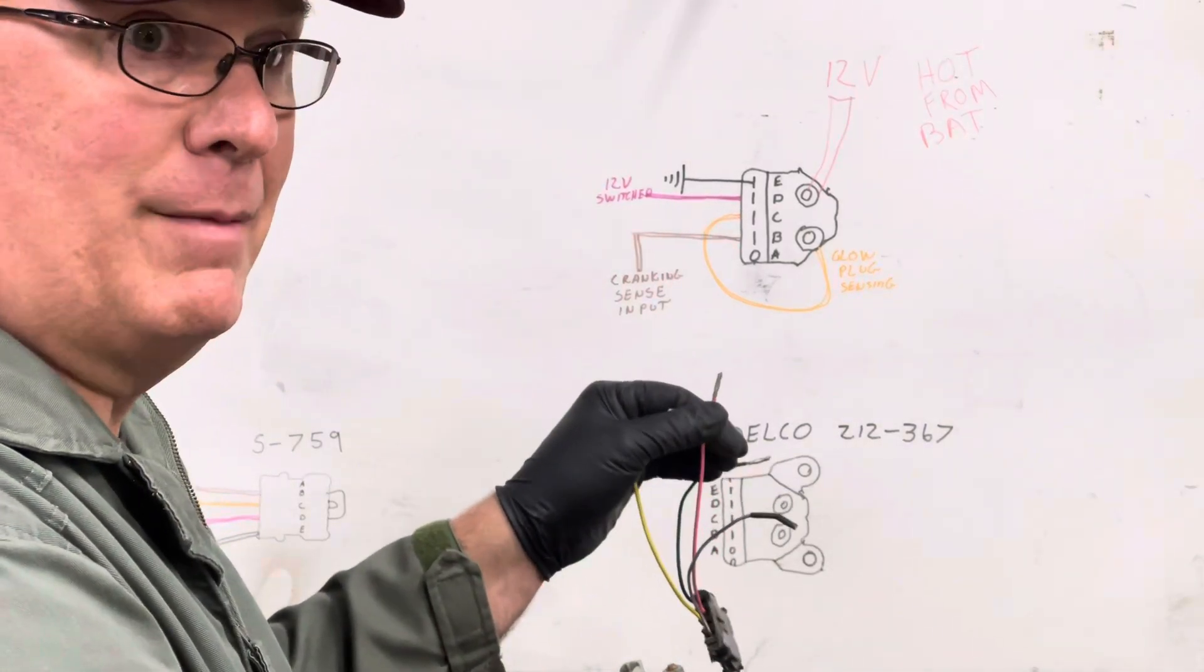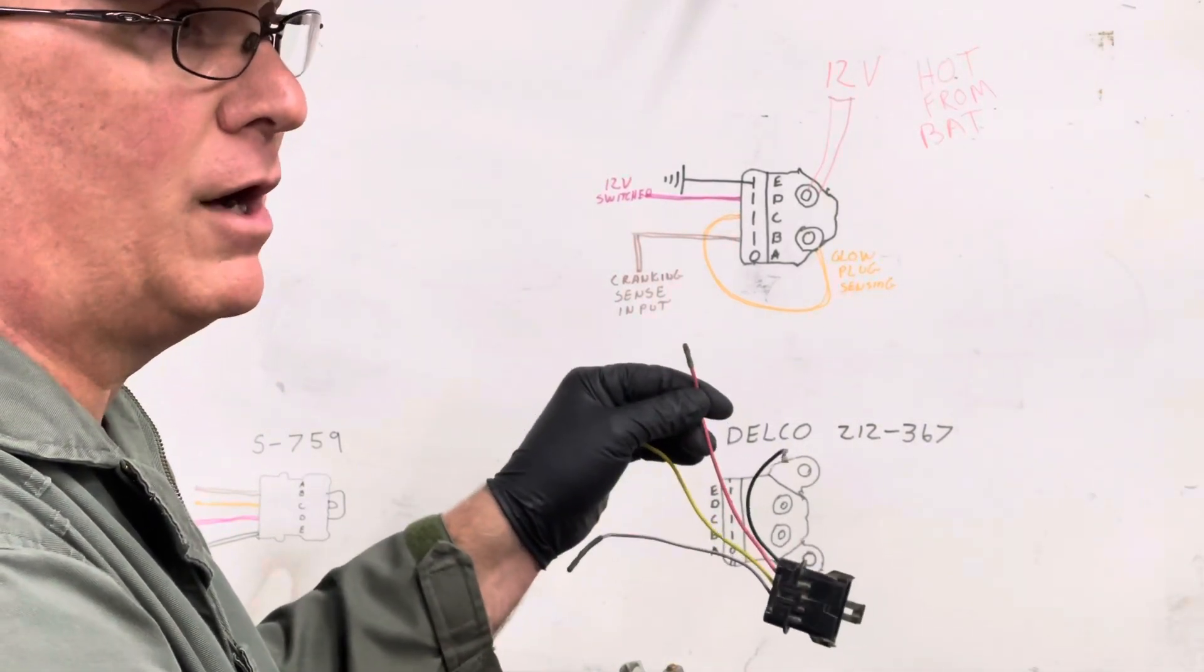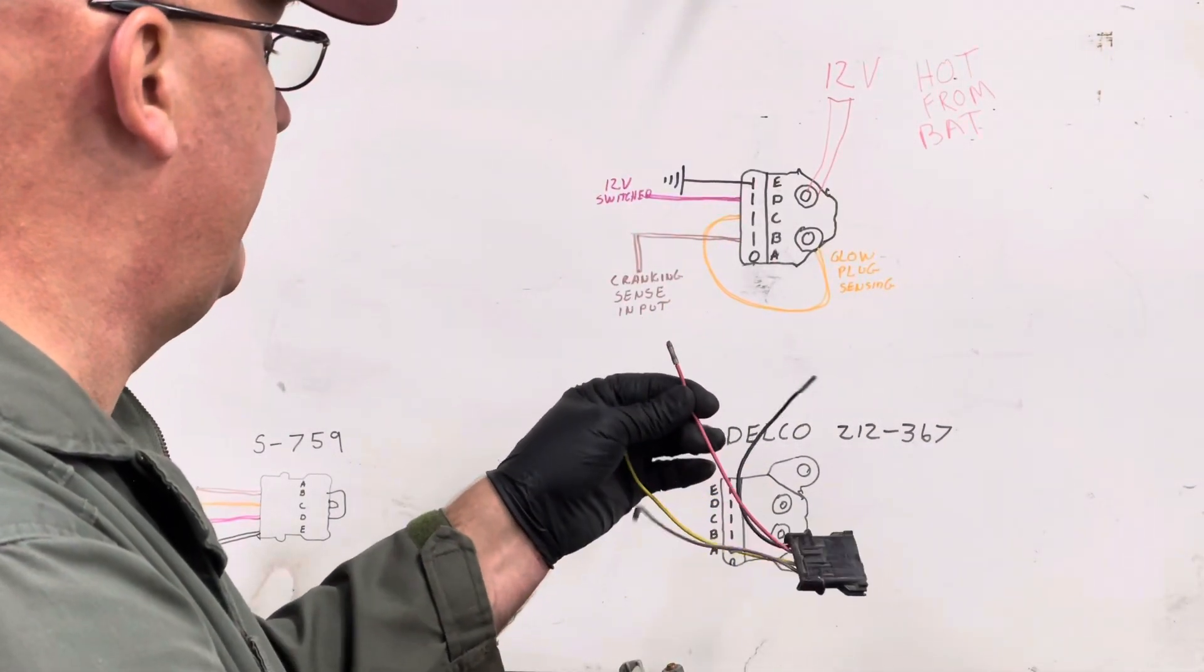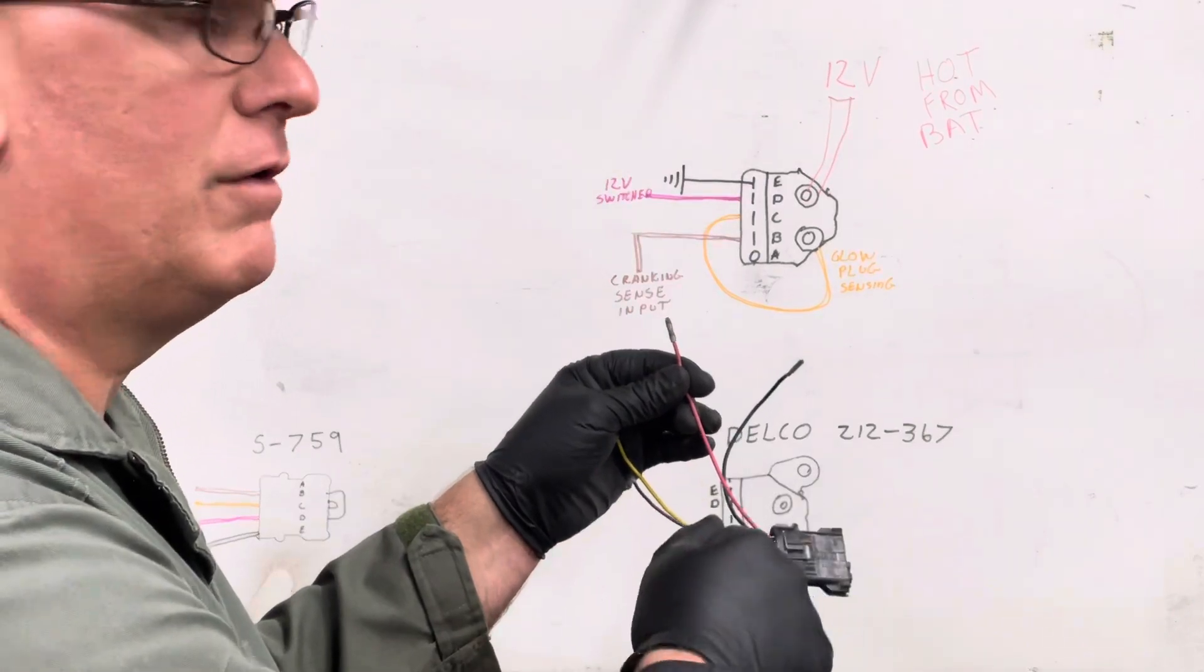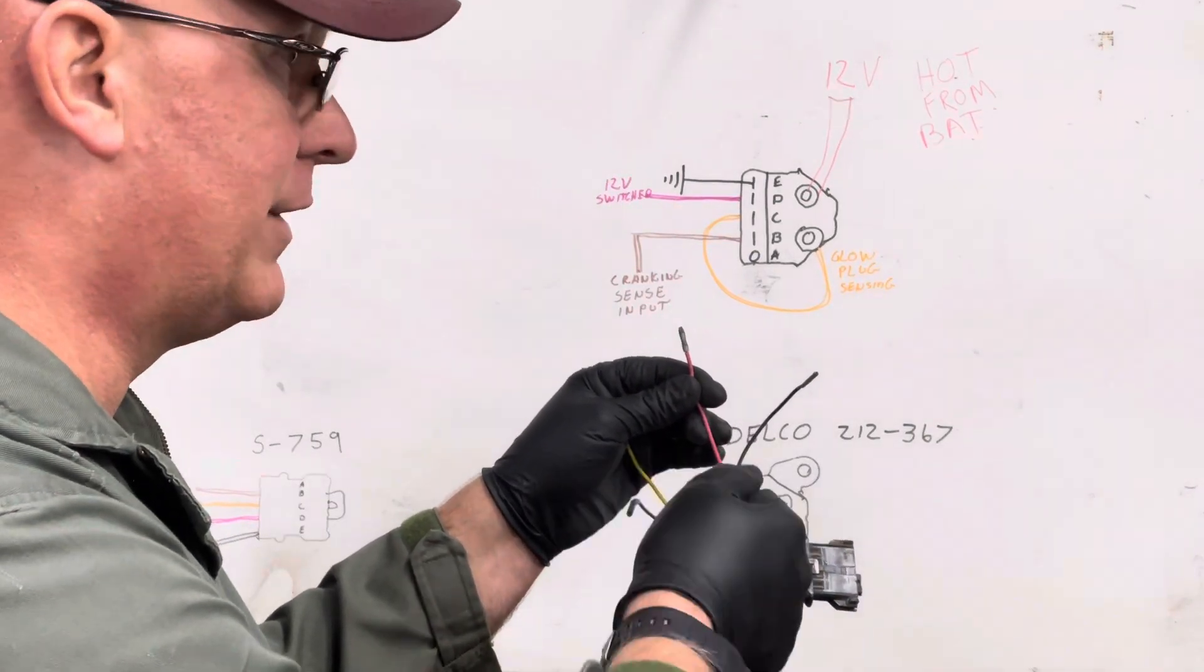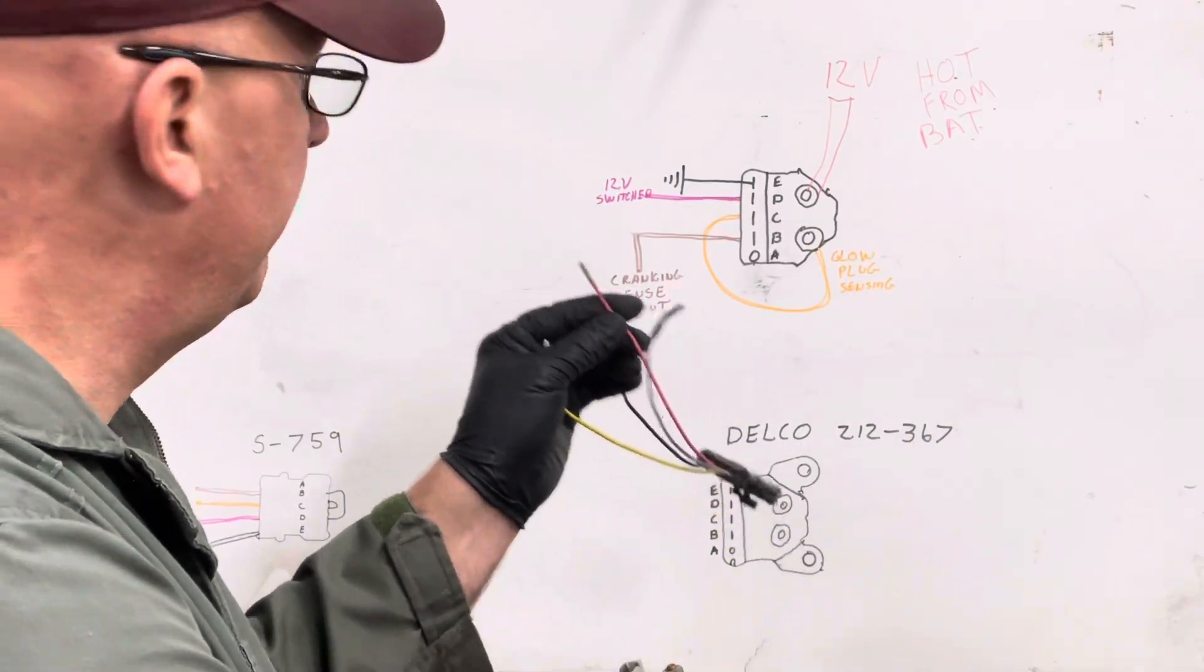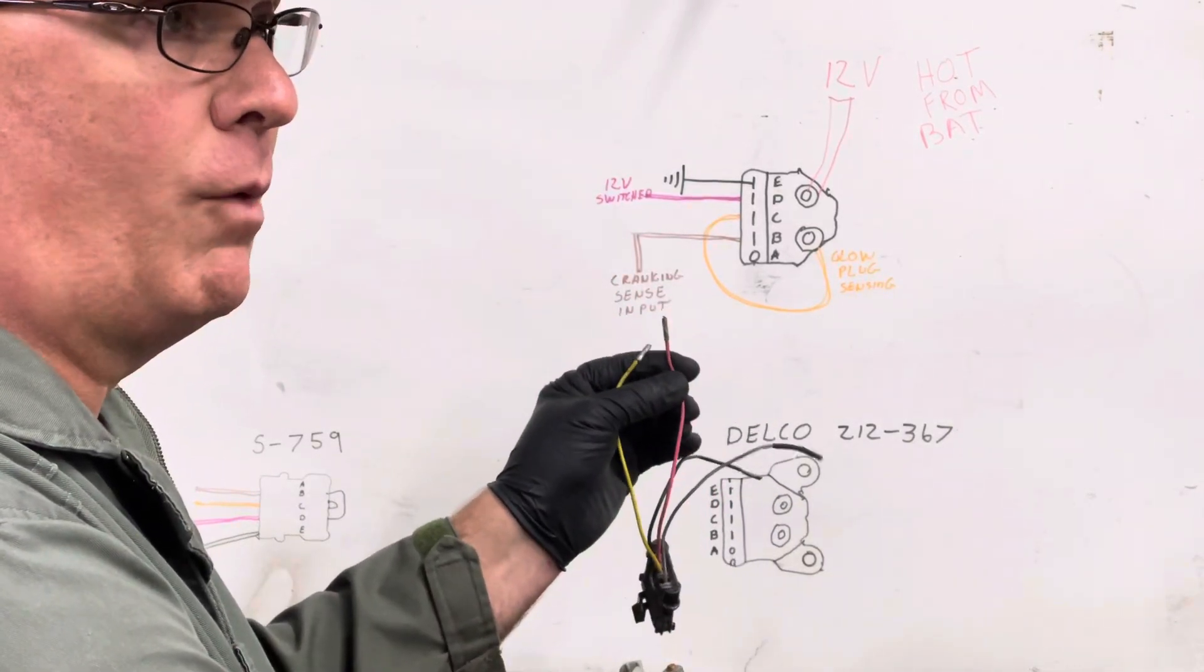If you have a vehicle that came with a 6.2 diesel, it has a pink wire going to the injection pump. The pink wire, same thing, switched 12 volts. As in you turn the key on, it gets power. If you had a glow plug setup in your vehicle before, you already have the pink wire going to your glow plug setup you're trying to replace.